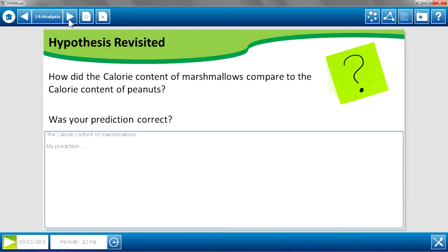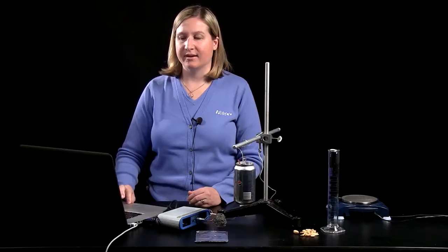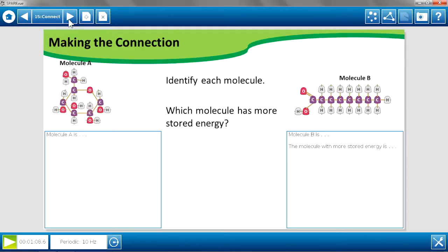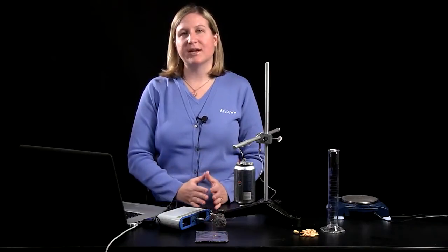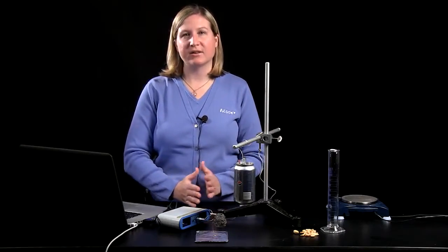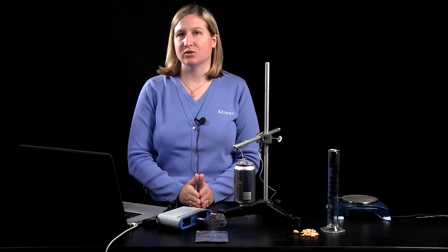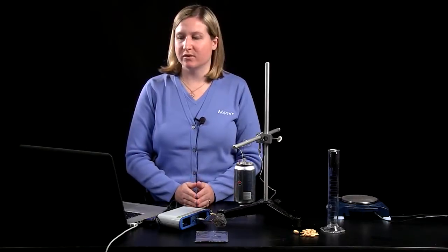So then you would ask students to revisit their hypothesis, the prediction that they made at the beginning for marshmallows compared to peanuts, and explain whether or not their prediction was correct. And then you want to lead students to the big idea of this lab. So students sometimes get bogged down in the calculations and the math, but you want to keep students focused on that final answer of calories per gram. And then to make the connection to what kinds of molecules these foods have, and the structures of those molecules.